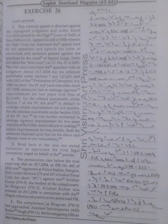This criminal appeal is directed against the impugned judgement and order dated 7 November 2014 passed by the High Court of Delhi at New Delhi in Criminal Appeal No. 634 of 2008, wherein the High Court has dismissed the appeal filed by the appellant and upheld the order of conviction and sentence passed against the appellant by the Court of Special Judge Delhi, for short the trial court, in CC No.